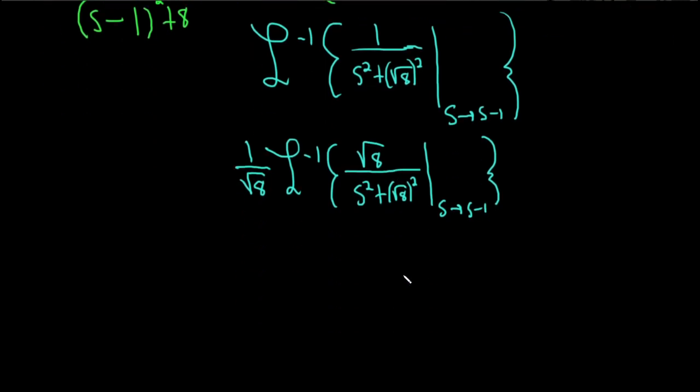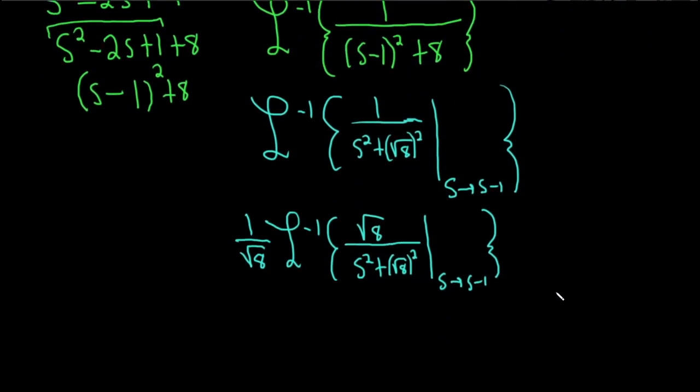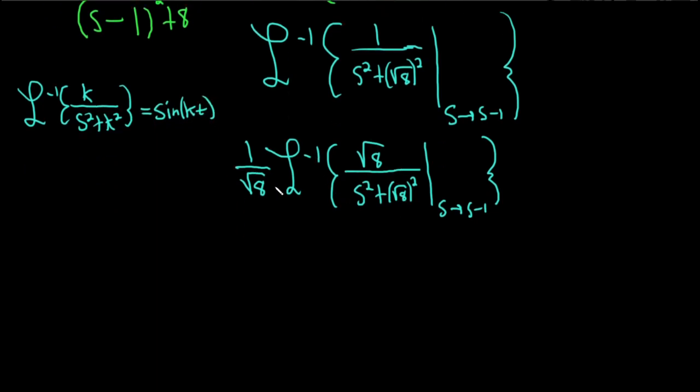Now we can apply the formula. Recall that the inverse Laplace of k over s squared plus k squared is sine of kt. Here, k is the square root of 8. So this will be 1 over the square root of 8 times sine of the square root of 8 times t.